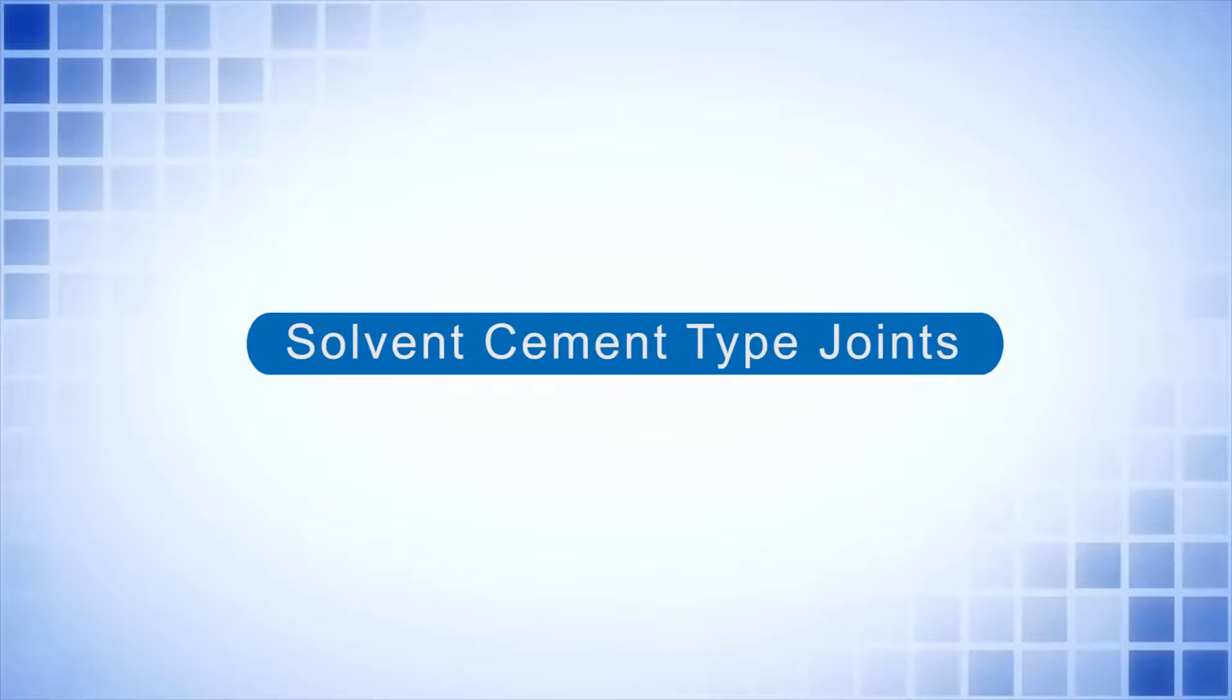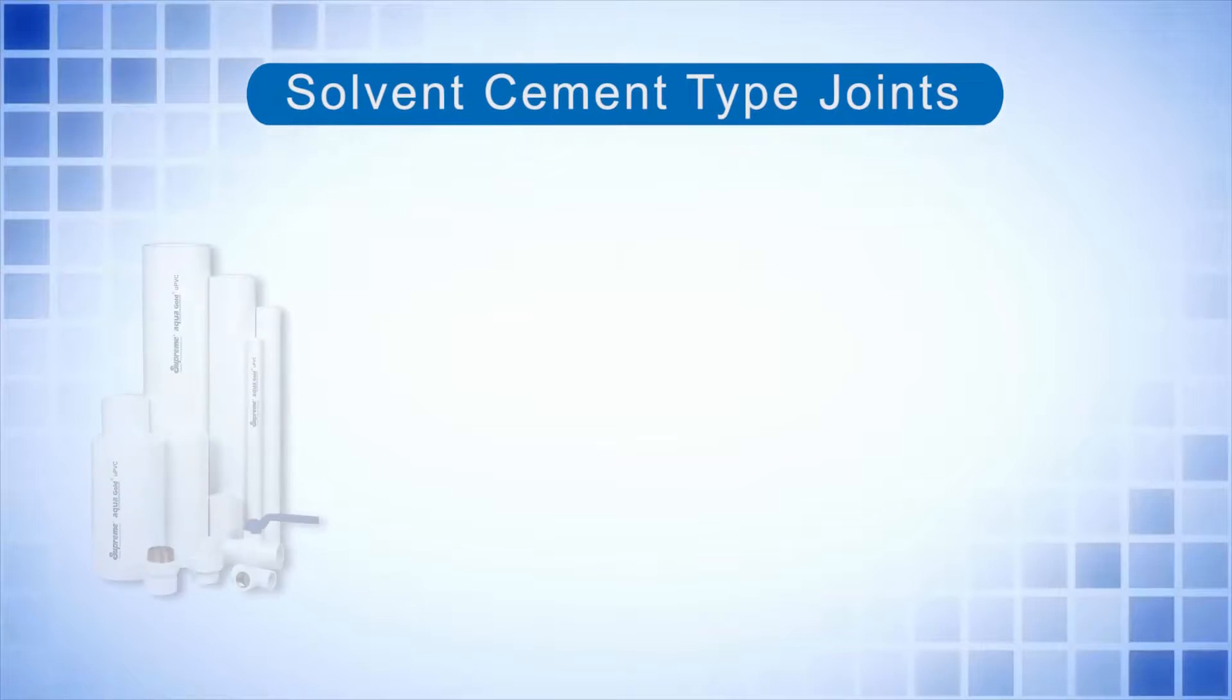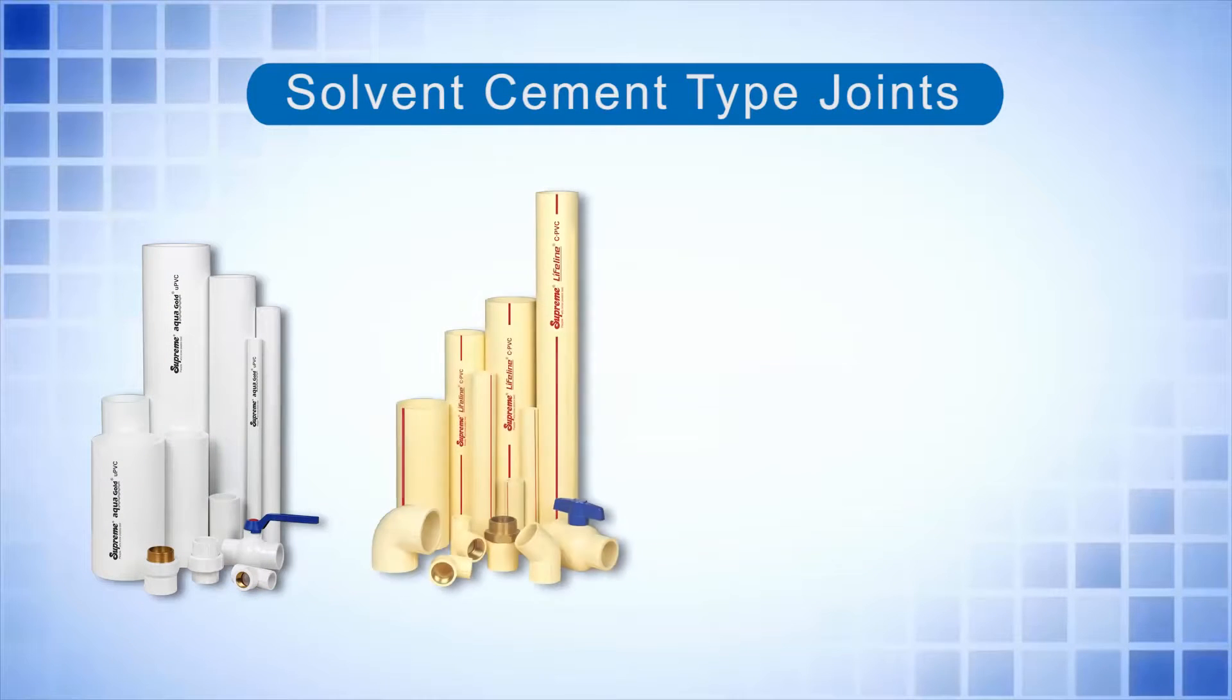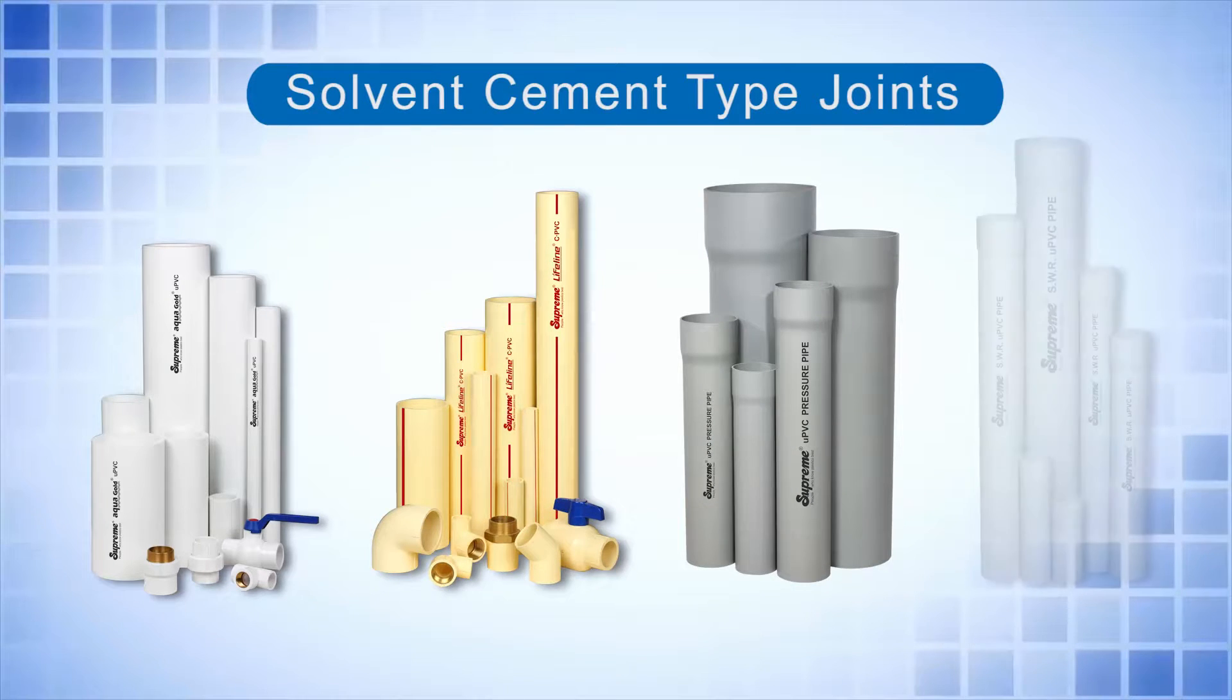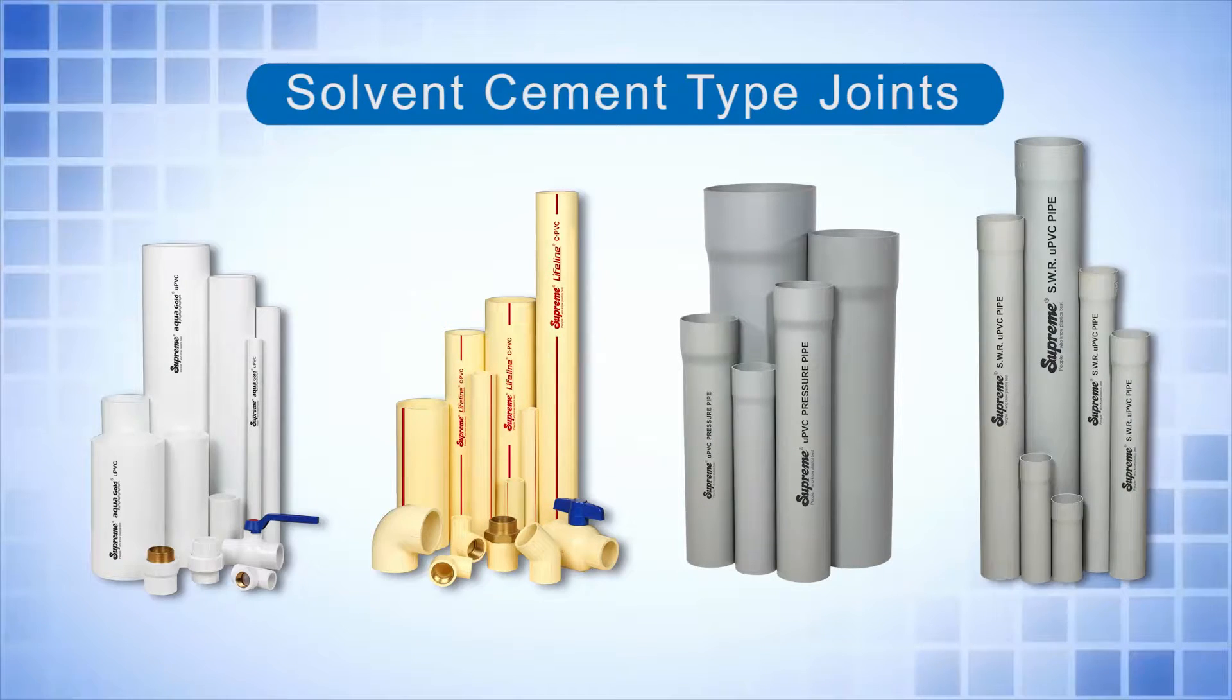Solvent Cement Type Joints. Solvent cement type joints are used for UPVC and CPVC plumbing systems as well as for UPVC pressure pipes and SWR pasted type products.